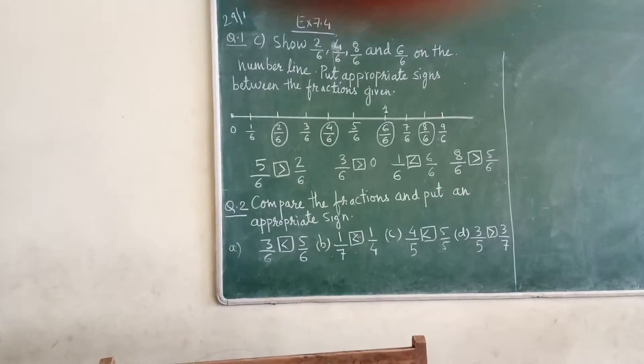Then 8 upon 6 and 5 upon 6. We know 8 is greater than 5, so 8 upon 6 is greater than 5 upon 6.